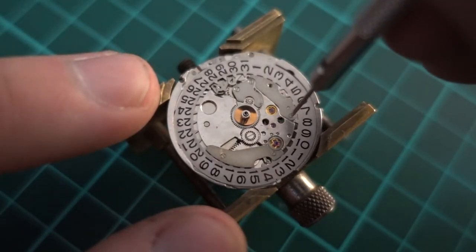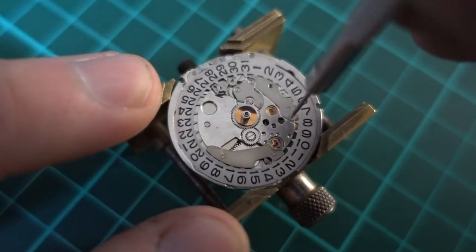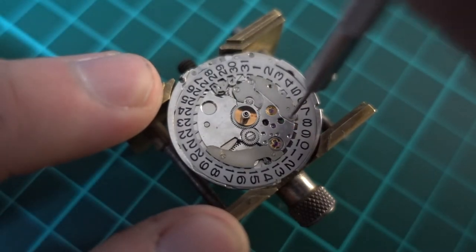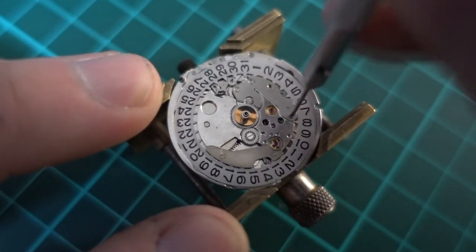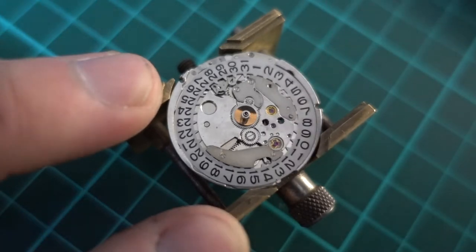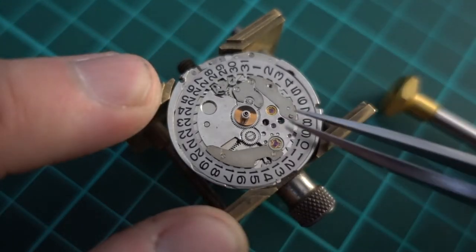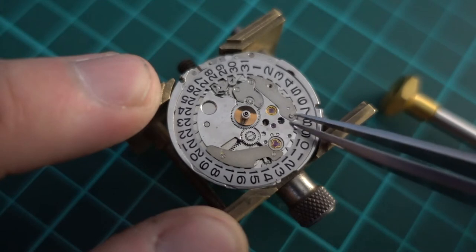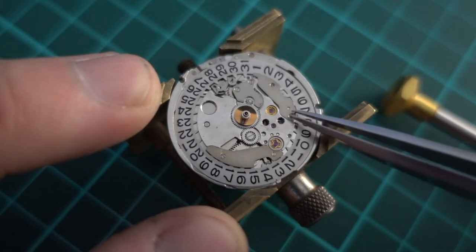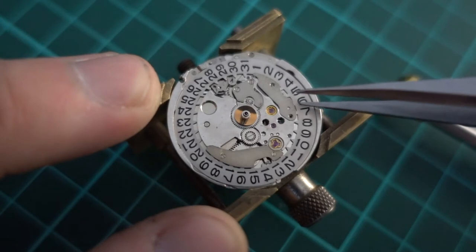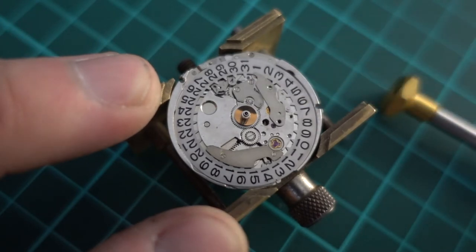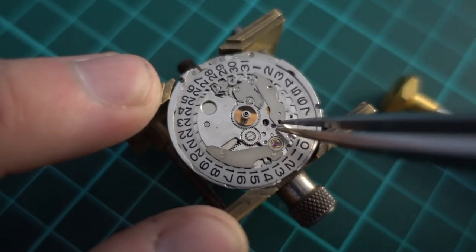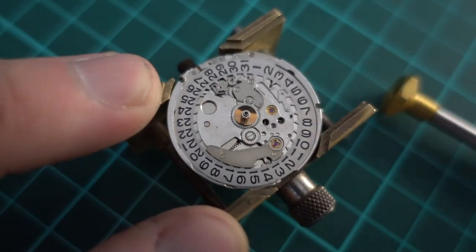The first part that I'm taking off there is just the calendar plate. With this watch they only have a date. You'll see there I'm just taking off those small screws. Now I've already taken off the dial and hands which I didn't do on camera because it's quite fiddly, and because of the good condition of the dial I didn't want to risk damaging it.